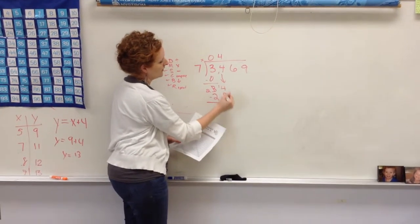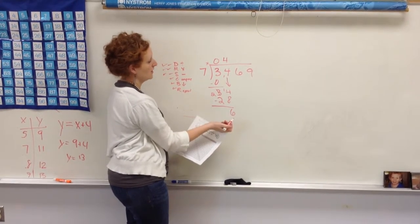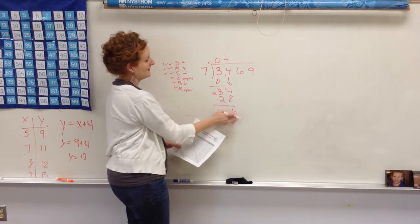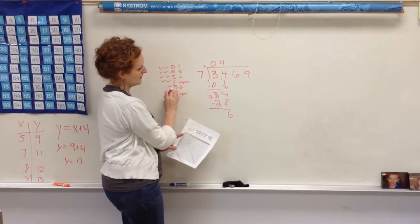Okay, so 4 minus 8 is 6, and 3 minus 2 is 0. I need to compare. Is 6 less than 7? Yes, it is, so I'm doing good. Now I need to bring down my next number.